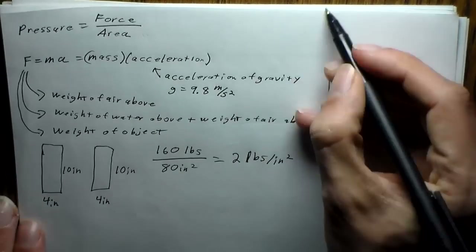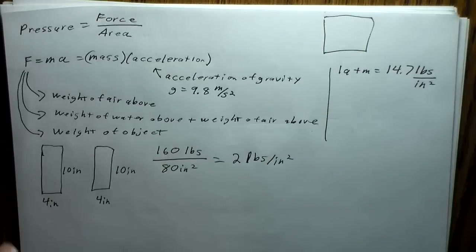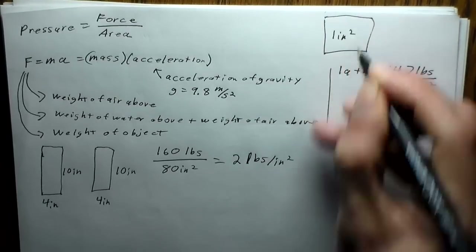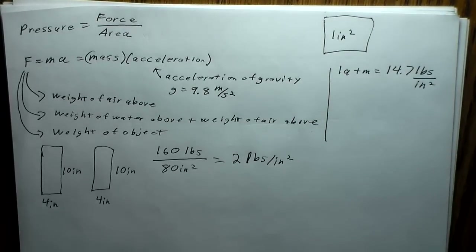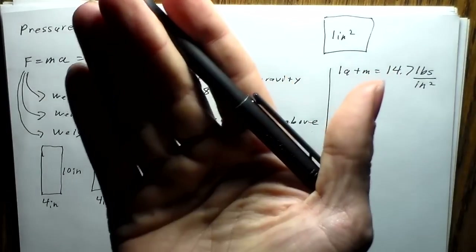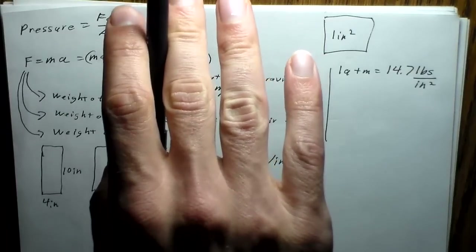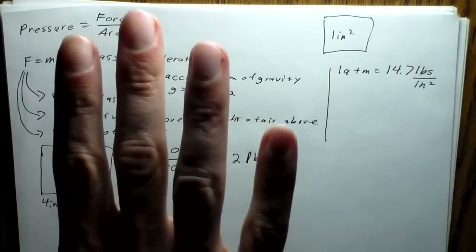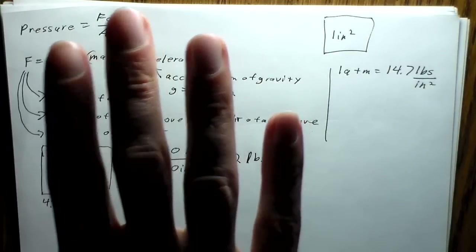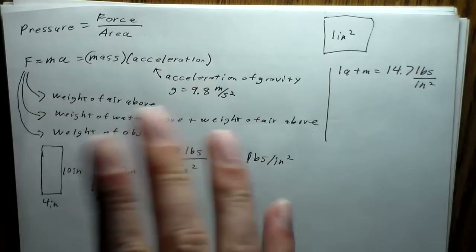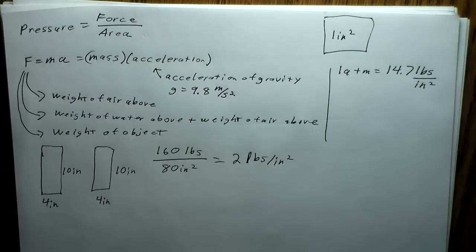On every square inch of surface — about yay big — there are 14.7 pounds of force pushing down. That means on every square inch of my body surface, there's 14.7 pounds pushing in. The reason I don't get squished is that on the inside, I'm also pushing out with about 14.7 pounds — actually just a tad more, which is where blood pressure comes from. It's this whole equilibrium.